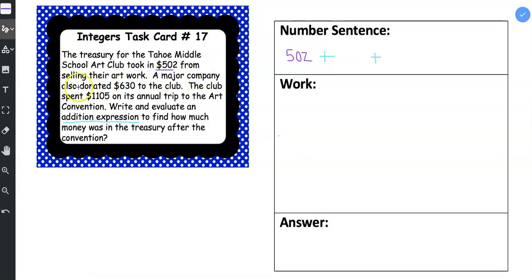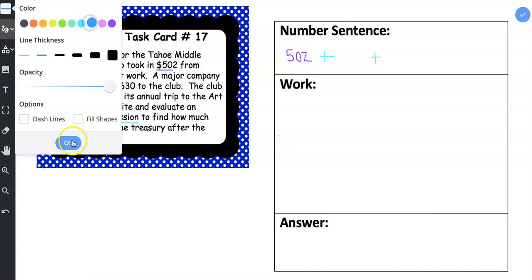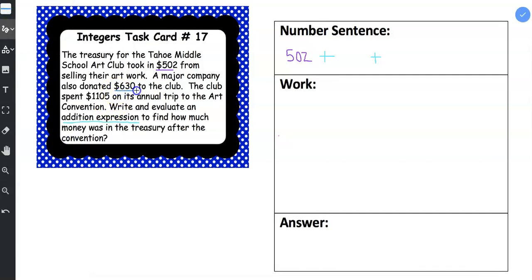Then it says a major company also donated $630. Let me use a different color for that. So this was a donation so this is also an increase to their account. They got another $630 as a donation.